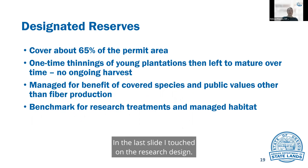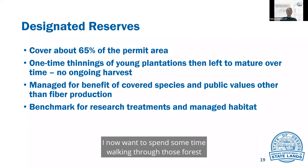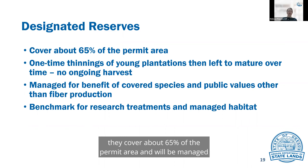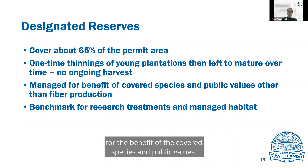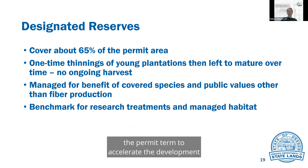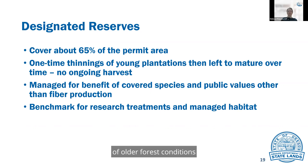In the last slide I touched on the research design; I now want to spend some time walking through those forest management types. Designated reserves are just that — reserves. They cover about 65% of the permit area and will be managed for the benefit of the covered species and public values. These areas will not be actively harvested, but a single-entry thin may occur in stands that are less than 65 years old as of 2020, during the first 20 years of the permit term, to accelerate the development of older forest conditions.